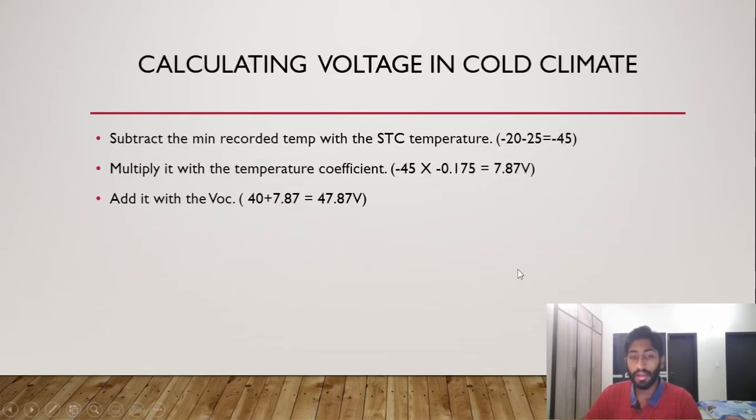For calculating voltage in cold climate, you basically subtract the minimum recorded temperature, which is I think minus 20 degrees Celsius, subtract that with the STC temperature. So minus 20 minus 25 gives us minus 45 degrees Celsius. Then you multiply that value with the temperature coefficient of Voc, which in this case is minus 0.175 volts per degree Celsius. Multiply it and get the voltage of 7.87 volts added with the Voc of 40.